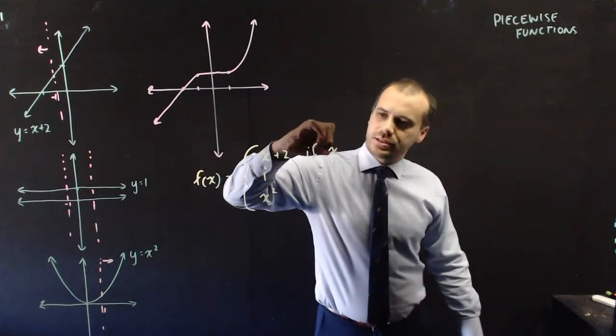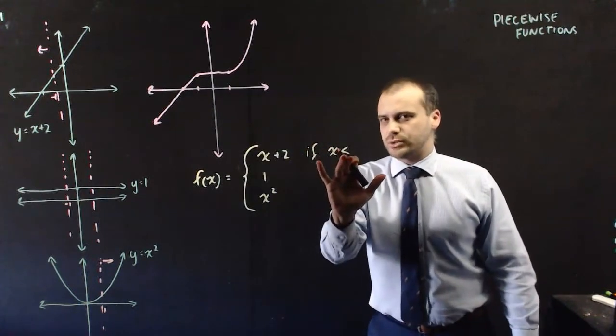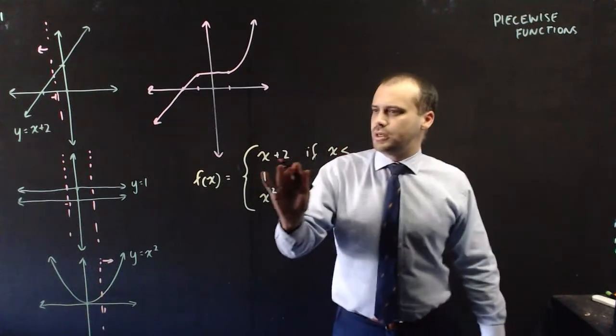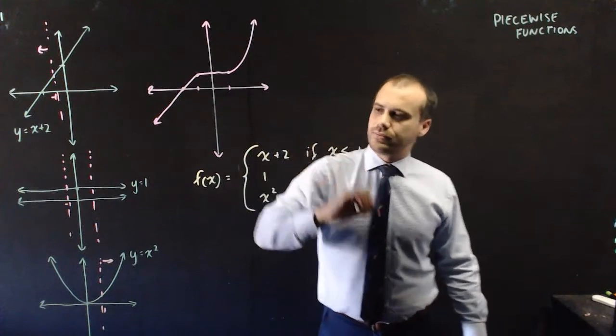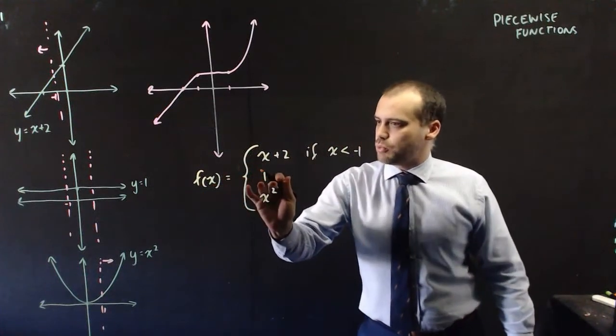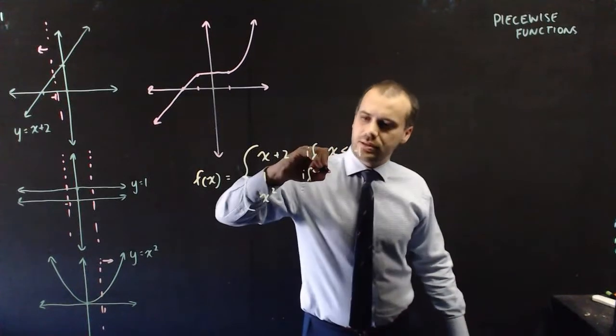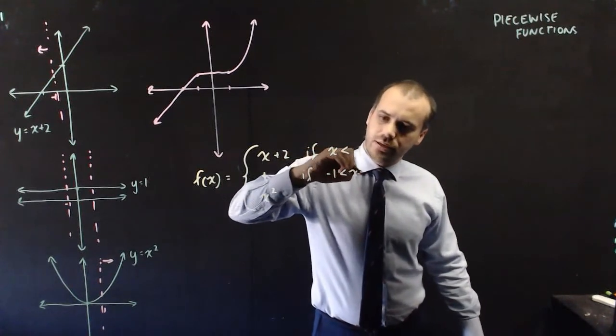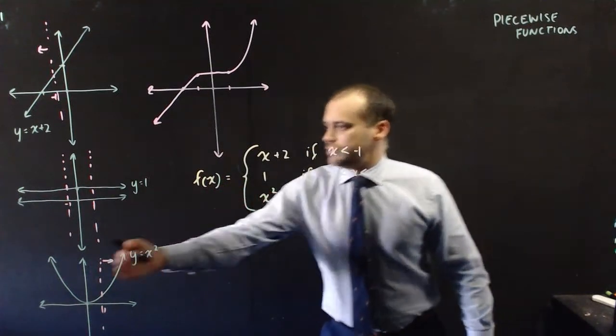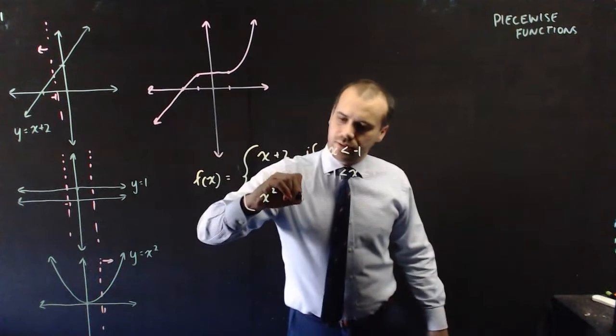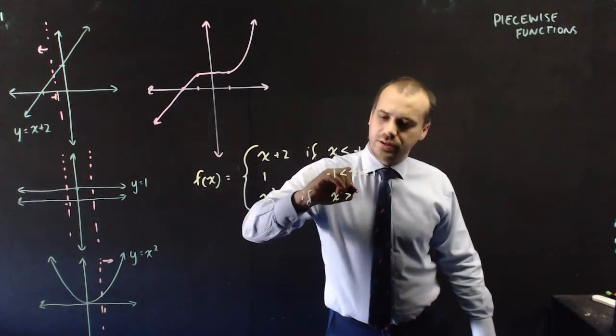If x is less than, and I'm going to mess around with the less than or equal to sign, so just wait a moment. x plus 2 if x is less than negative 1. f of x equals 1 if x is between negative 1 and 1. And f of x equals x squared if x is larger than 1.